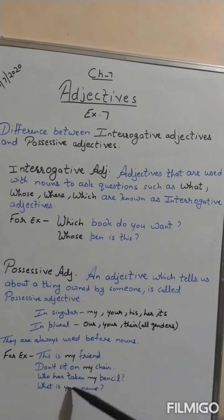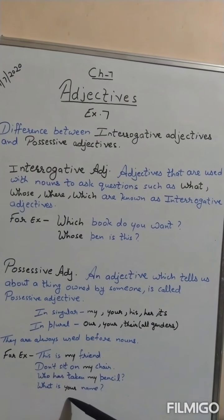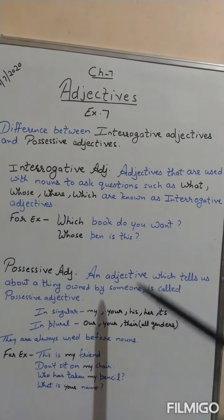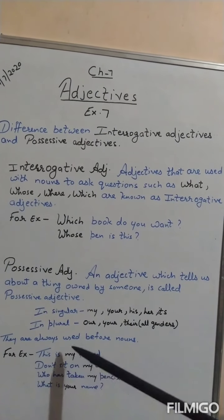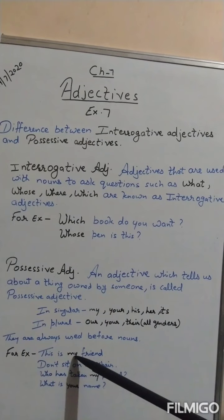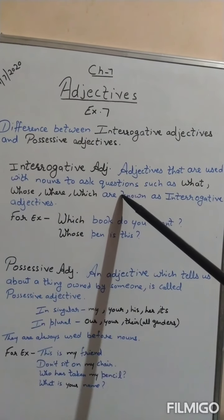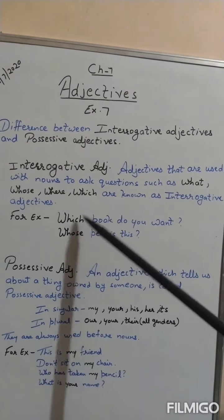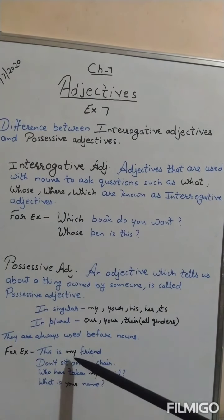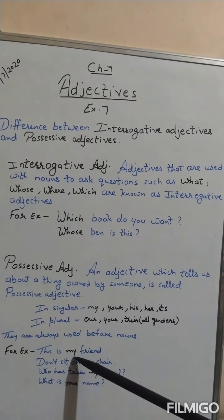'What is your name?' — 'name' is the noun and 'your' is the possessive adjective. Once again, I want to tell you in Hindi also: possessive adjective जो है, वो noun से पहले आता है. और interrogative adjective में, adjective जो होता है, वो noun के साथ आता है.